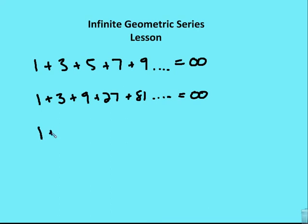So, for example, if I have 1 plus 1 half plus 1 fourth plus 1 eighth plus 1 sixteenth and so on and so forth, I'm going to end up with, as I go to infinity with all these terms, with a number or a value that is finite.